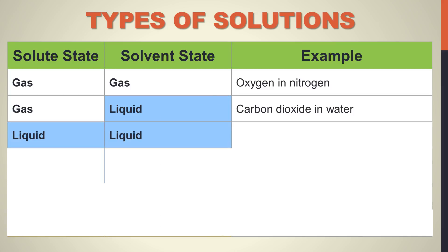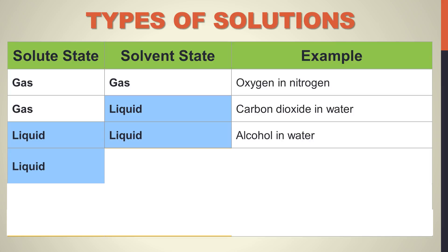A liquid dissolved in another liquid would be, like I mentioned before, alcohol in water. If you're buying alcohol — be it isopropyl alcohol, ethanol, or propanol — it's usually not going to be 100% pure. It's usually going to be diluted a bit with water. So there you have one liquid dissolved in another liquid.